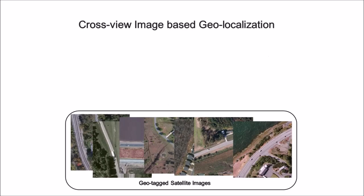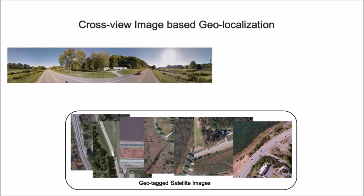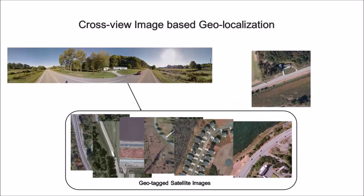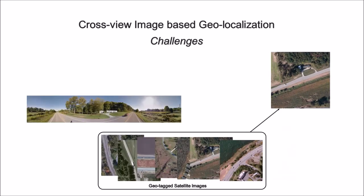First, I would like to revisit the problem of cross-view image-based geo-localization. The overall task is to predict the latitude and longitude of a query street-level image by matching it against a GPS-tagged satellite database. However, the significant domain gap between street-view and top-view satellite images makes cross-view image-based geo-localization extremely challenging.